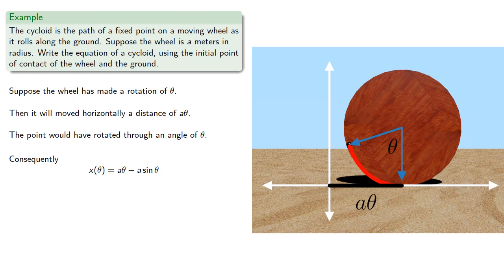The vertical distance we might go up to the center of the circle and then back down a cos θ. So the y coordinate would be a minus a cos θ.